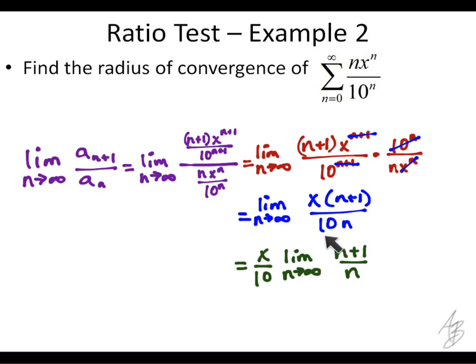And so what is this limit right here going to be? The limit as n approaches infinity of n plus 1 over n. That's going to be 1. You could use L'Hopital's Rule for that. You could modify that by dividing the top and the bottom by n or multiplying the top and the bottom by 1 over n. However you do it though, that's going to be 1.